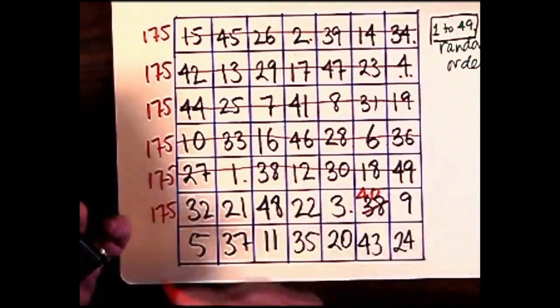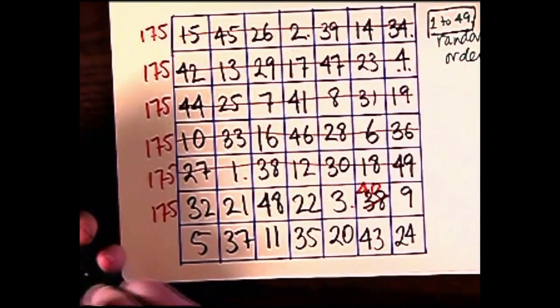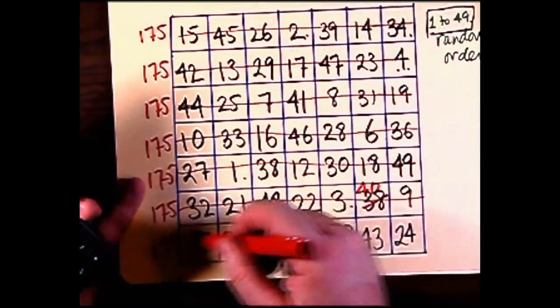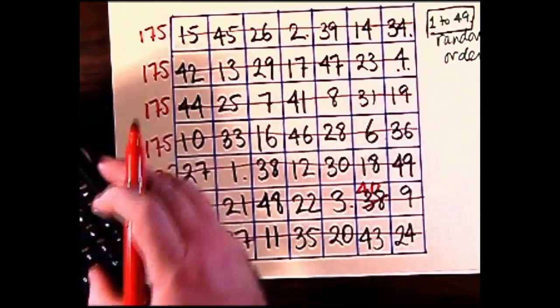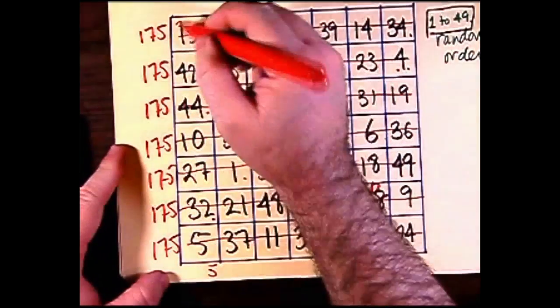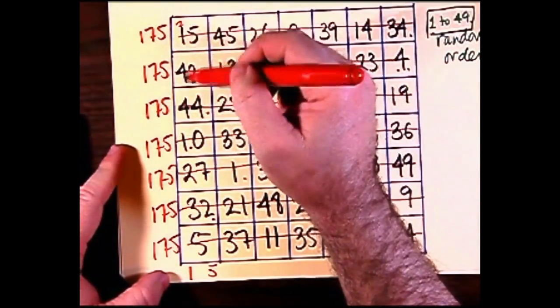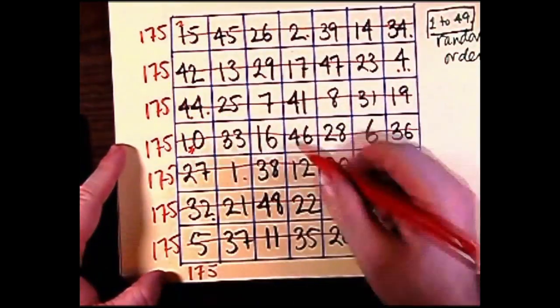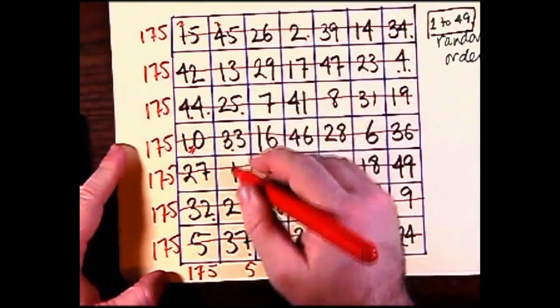175 is the magic number for a 7 by 7 square whose numbers consist of the numbers 1 to 49 non-repeating. Because it's a 7 by 7, there are only 49 squares. So if they are to consist of the numbers 1 to 49, then they can't repeat.